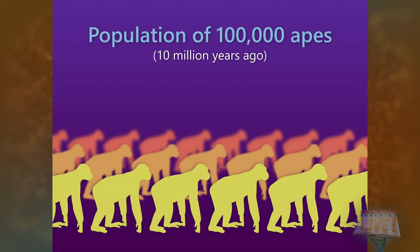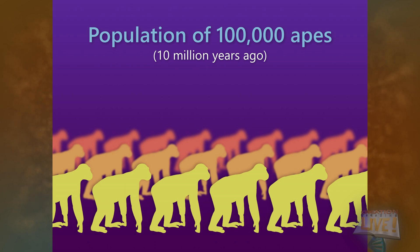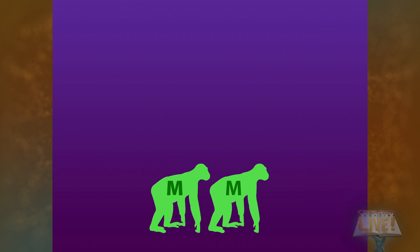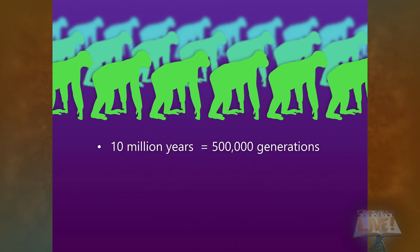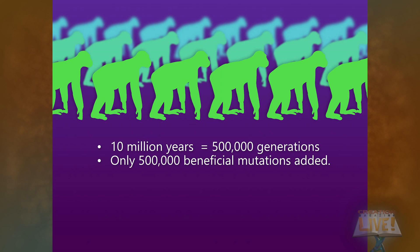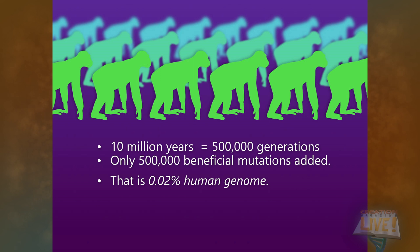He explained it like this: imagine a population of 100,000 ape-like creatures 10 million years ago — more than the supposed time since the last common ancestor of humans and apes. Suppose a male and a female both received a mutation so beneficial that they survived while the 99,998 others all died out. Then they had enough offspring to replenish the population of 100,000 in one generation. If this repeated every 20 years for 10 million years, there would be 500,000 beneficial mutations added to the population — amounting to only 0.02% of the human genome.